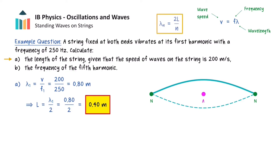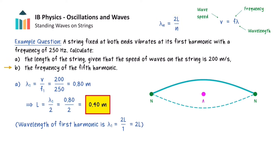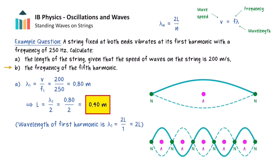Alternatively, we can recall the equation that relates the wavelength of the nth harmonic to the length of the string. By substituting n equals 1, we see that the wavelength is 2 times the length of the string and so we would arrive at the same answer. Part B of this example wants us to calculate the frequency of the fifth harmonic. For a string with two fixed ends, the fifth harmonic will have 5 antinodes. Moreover, the fifth harmonic will have a frequency that is 5 times the frequency of the first harmonic. Since the frequency of the first harmonic is 250 Hz, the frequency of the fifth harmonic will be 5 times this, giving a value of 1250 Hz.